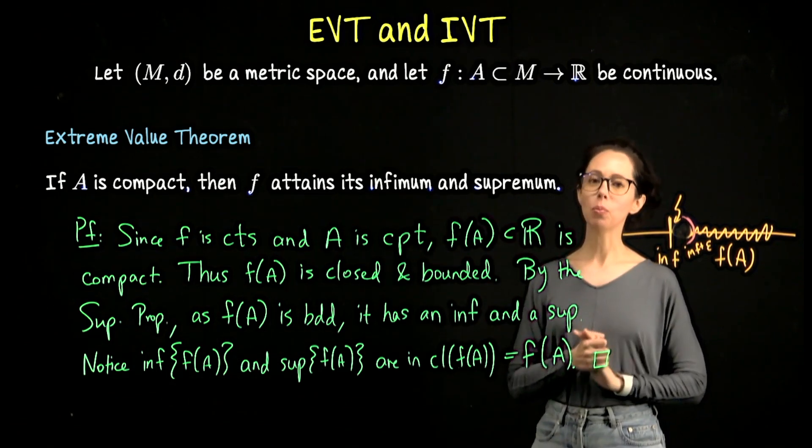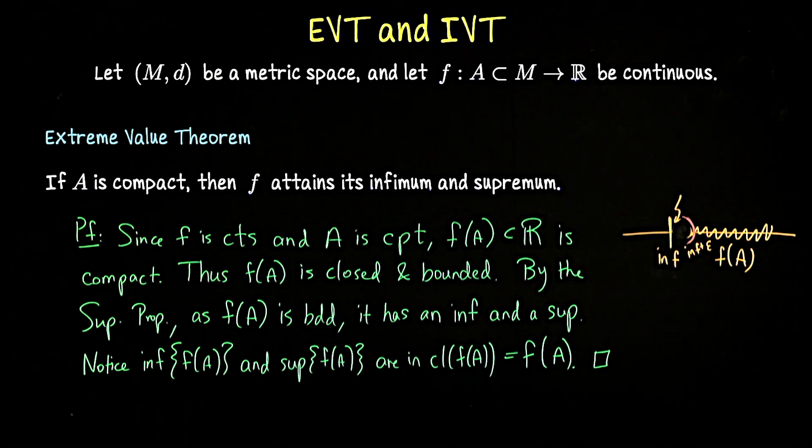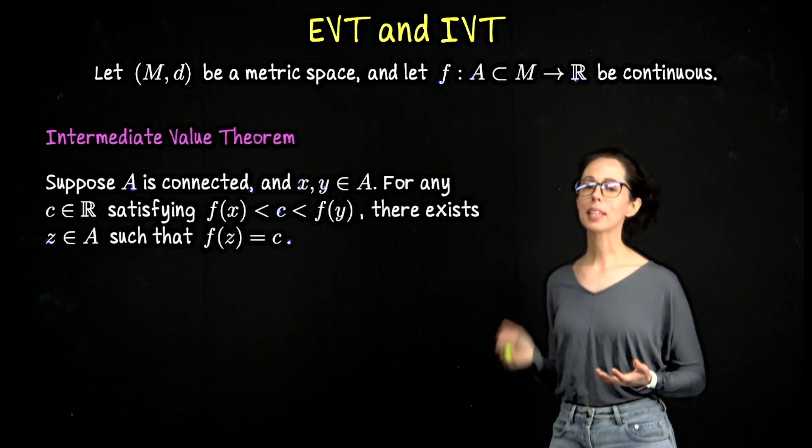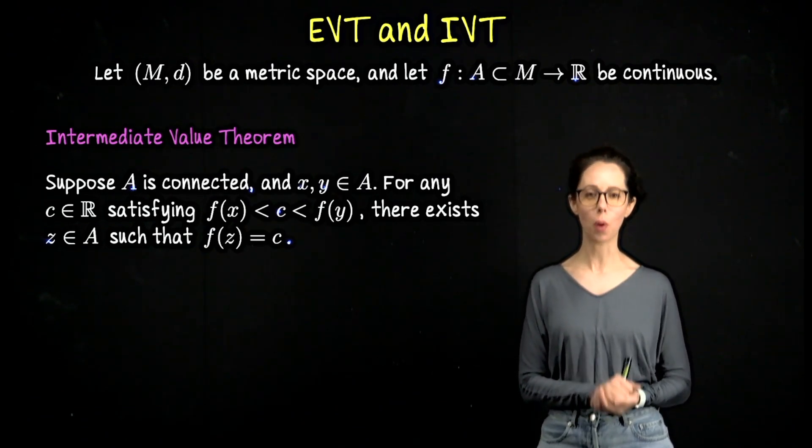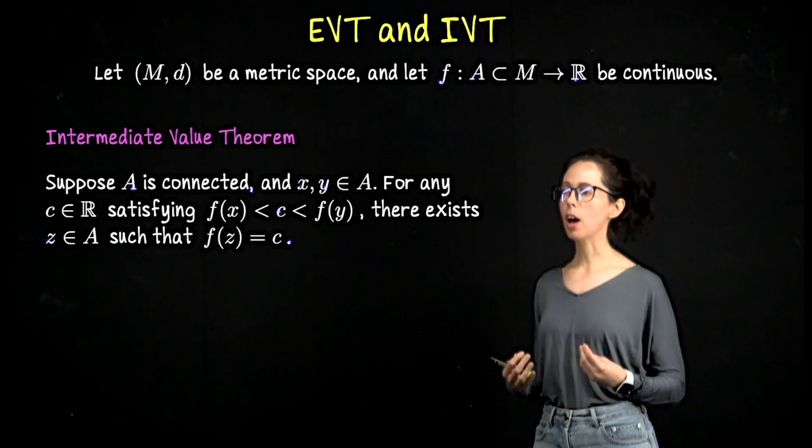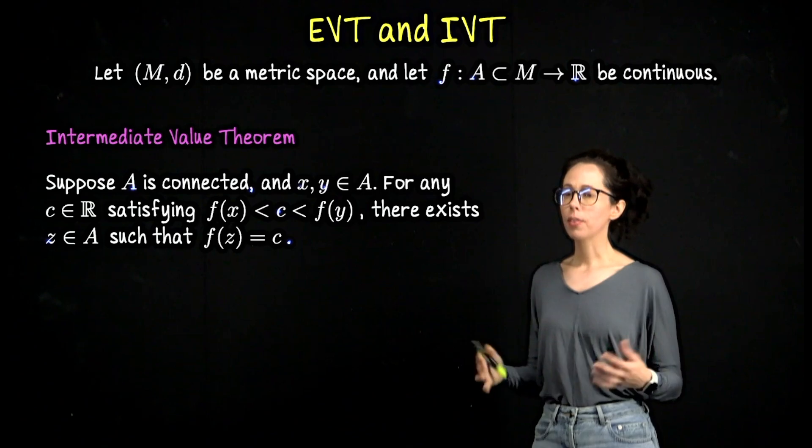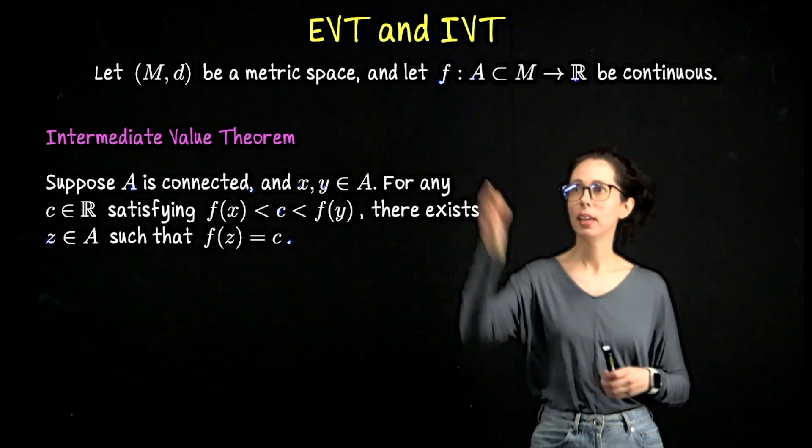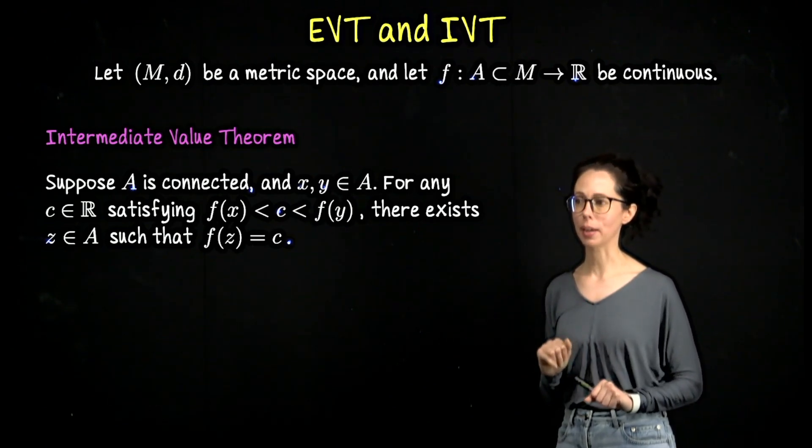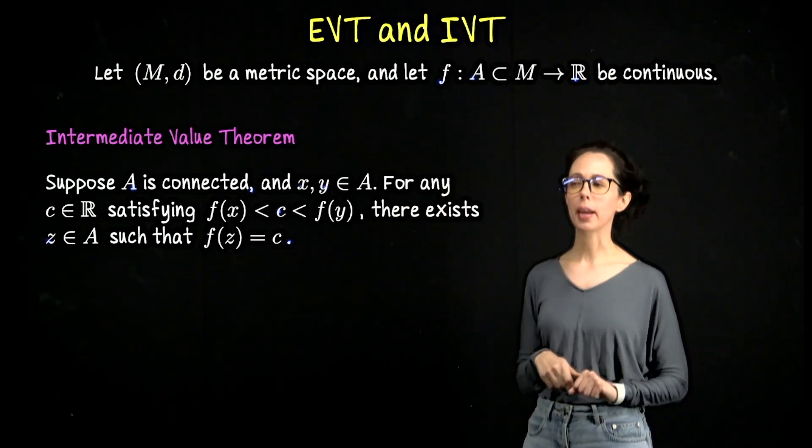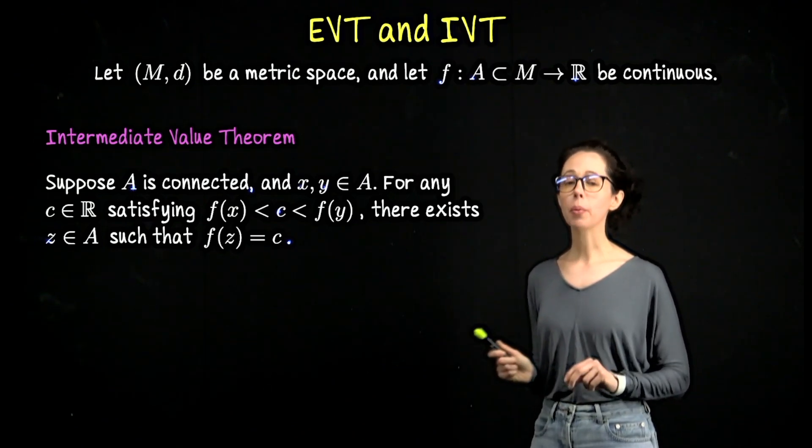That's the extreme value theorem. I will let you copy this down. We'll come back and look at the intermediate value theorem. What I'm presenting here is a more general form of the intermediate value theorem than you may have seen in real analysis one. In real analysis one, it's often stated from a domain which is a closed bounded interval. Here I'm saying from any connected domain in a metric space to R. The codomain is still the Euclidean real number line. Take a moment to read this statement and compare it to the intermediate value theorem which you might be familiar with.